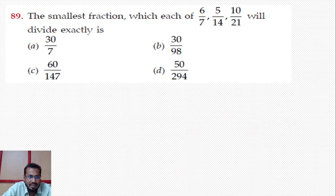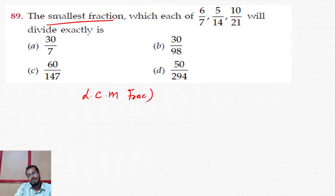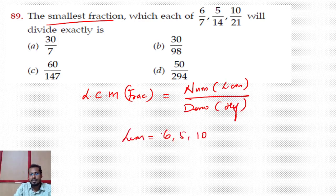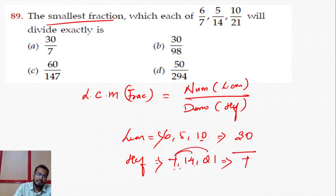89th question: The smallest fraction which exactly divides... For fraction LCM, the formula is: numerator as LCM and denominator as HCF. LCM of 6, 5, and 10 is 30. HCF of 7, 14, and 21 is 7. So 30 divided by 7 is the right answer, option A.